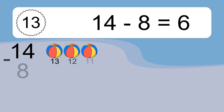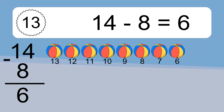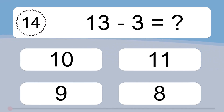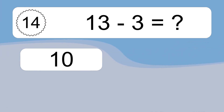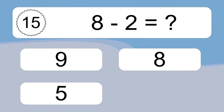14 minus 8 equals what? 12 minus 3 equals 6. Let's count it: 13, 12, 11, 10, 9, 8, 7, 6. 13 minus 3 equals what? 13 minus 3 equals 10. Let's count it: 12, 11, 10.